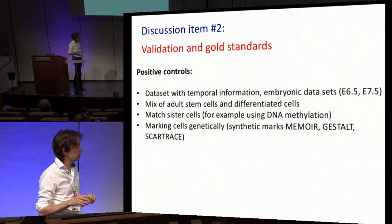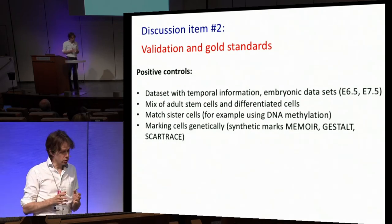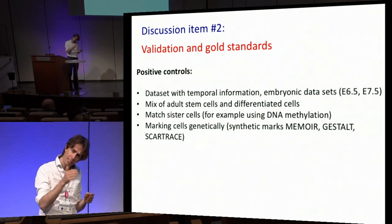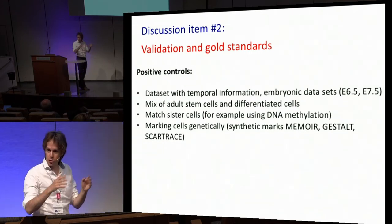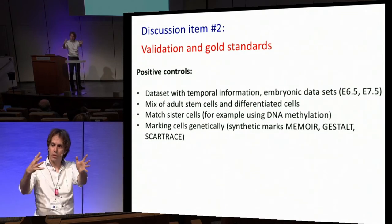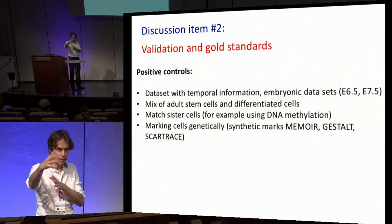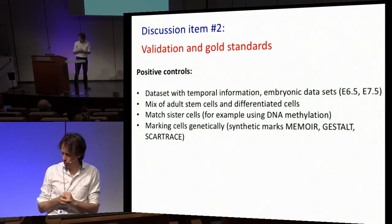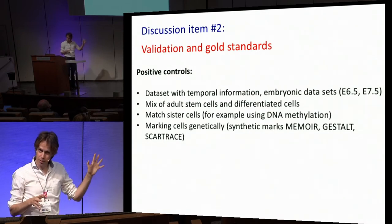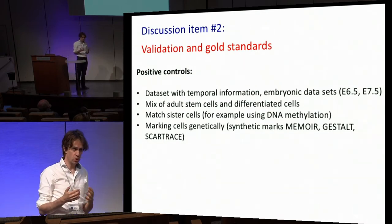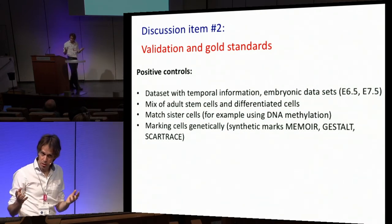You'd really like to have things more directly reflective of the lineage. Recently, a couple of very nice papers came out like Memoir and Gestalt. We have been pushing SCAR-trace, where you put genetic marks into the genome at a certain point in time. For example, in development, you label 1,000 cells early in development, let the organism evolve to adult states, and then you know at least the clonal origin of all these cells.